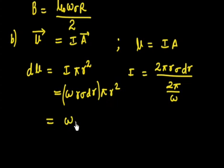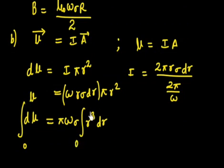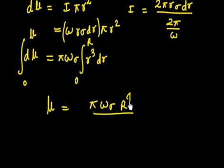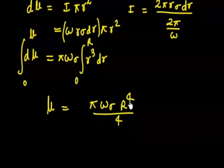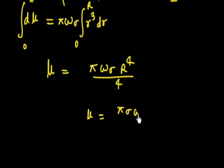To find the total magnetic moment, integrate dμ = π·ω·σ·r³·dr from 0 to R. Integration of r³ gives r⁴/4, so the total magnetic moment is: μ = π·σ·ω·R⁴ / 4. This is the magnetic moment of the rotating charged disc.